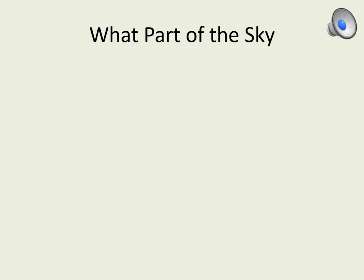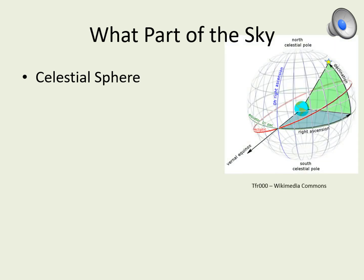The Earth's spin lets us define a celestial sphere — an imaginary sphere surrounding us. As we rotate, the stars appear to be fixed to this giant sphere as it slowly spins around us. There are certain special points on this sphere. One is the North Celestial Pole, which is an extension of the Earth's North Pole into space. Another is the South Celestial Pole, which is directly above the Earth's South Pole.